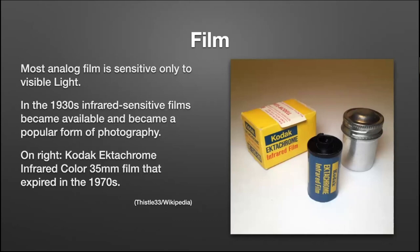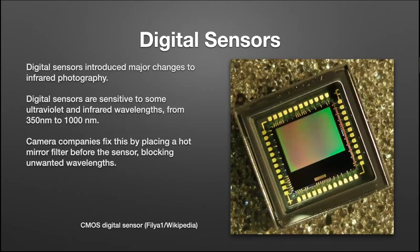A little bit of history. If like me you were shooting film for years, infrared film was the only option — you had to use filters, and the film would only see certain portions of the infrared spectrum. Whereas now with digital, modern digital sensors not only can see all visible light, but they also include the ultraviolet and infrared wavelengths, 350 to 1000 nanometers. Camera companies basically fix this problem by putting a hot mirror filter in front of the sensor, blocking all the unwanted wavelengths.